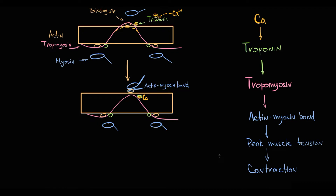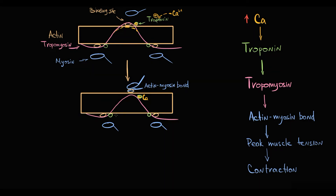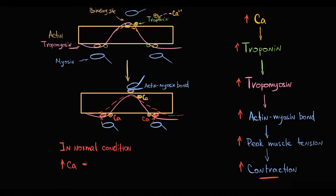The higher the calcium concentration in the cytosol, the more calcium will bind to troponin, thereby the stronger troponin will affect tropomyosin conformation. The more binding sites will be exposed, the more myosin molecules will bind to actin, and the higher the number of actin-myosin bonds. This results in a higher force of contraction, and in normal conditions this positive inotropic effect helps the heart pump blood.